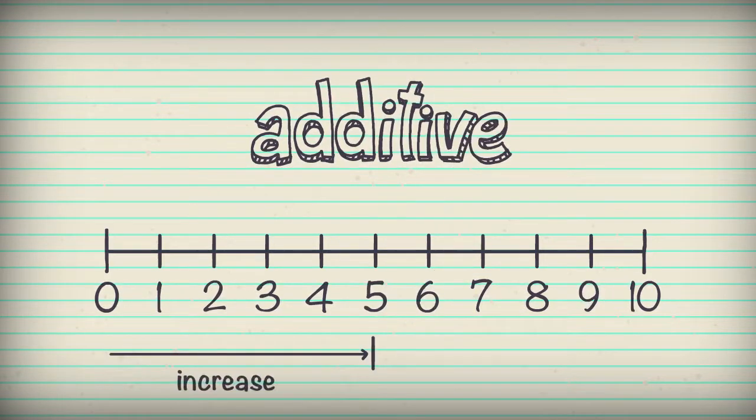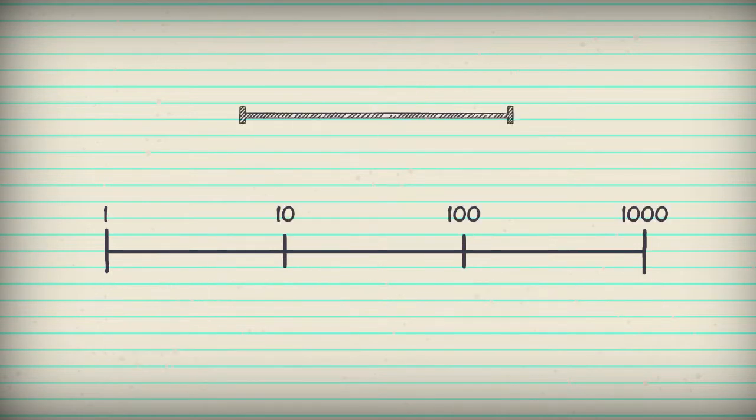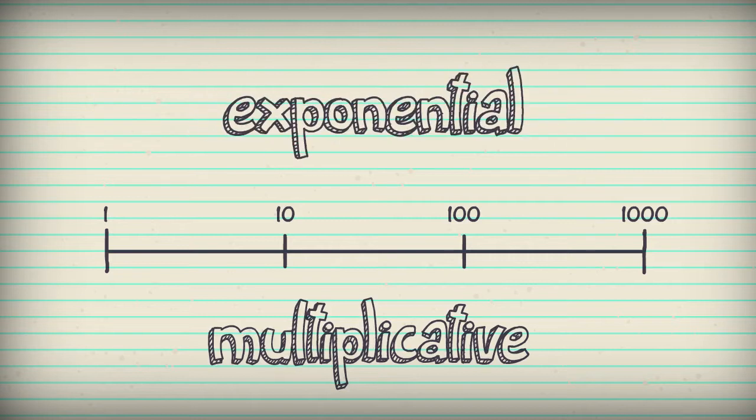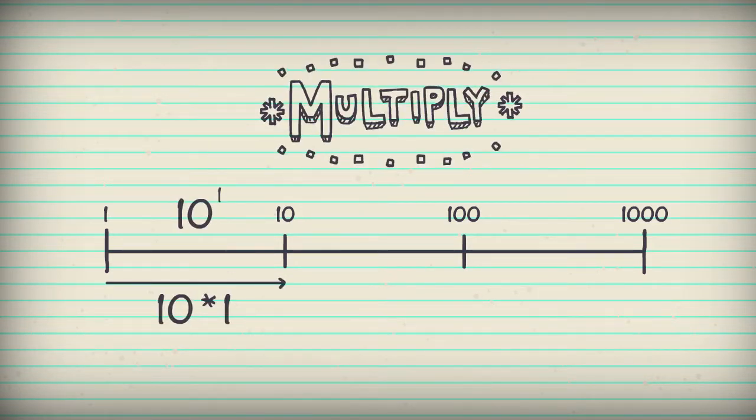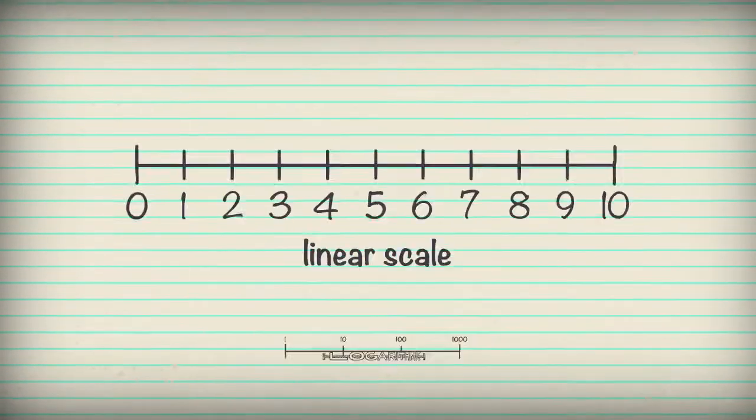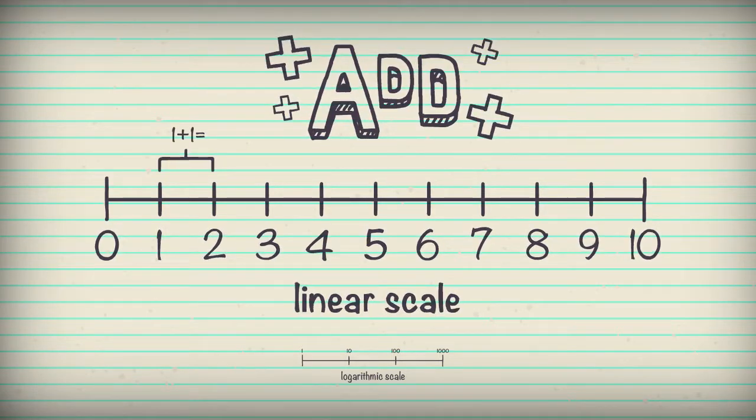Which means we add a value to increase or decrease on the scale. Logarithmic scales are multiplicative or exponential. That means we multiply a value to increase on the scale. So, on a linear scale we add: 0 plus 1 is 1, plus 1 is 2, plus 1 is 3.